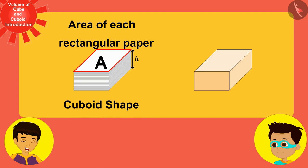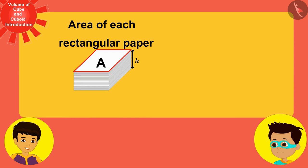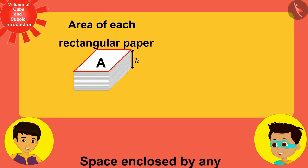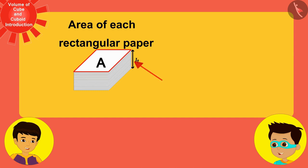The area of the base is A and the height is h. You already know that the space enclosed by any object is called its volume. Therefore, we can say that the space occupied by these cuboid paper packets is its volume V.